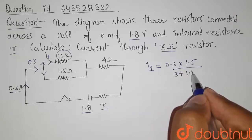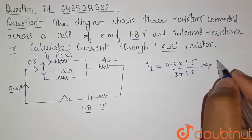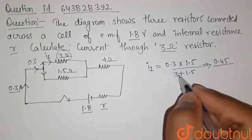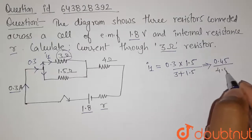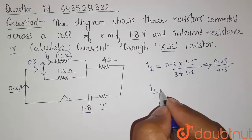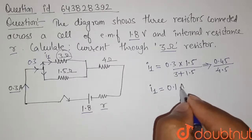So it is 3 plus 1.5. So now here it will be equals to 0.45 divided by and it will be equals to 4.5. So now on simplifying this we will have the value of I1 is equals to 0.1 ampere.